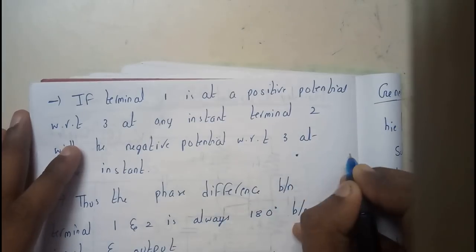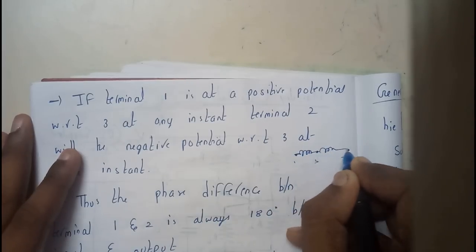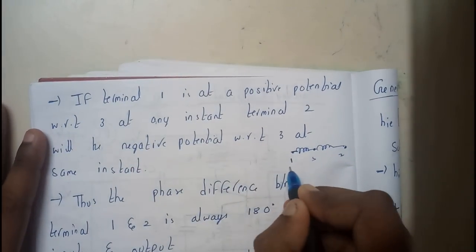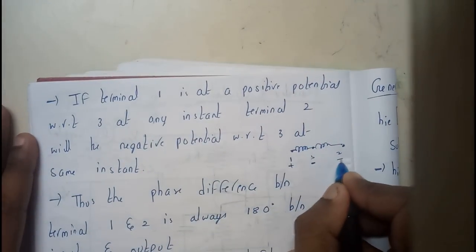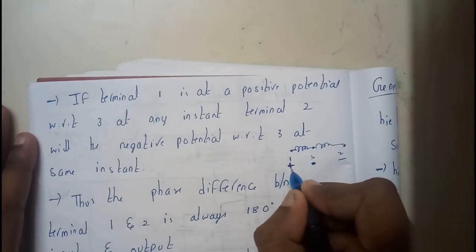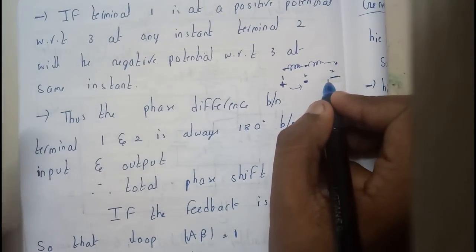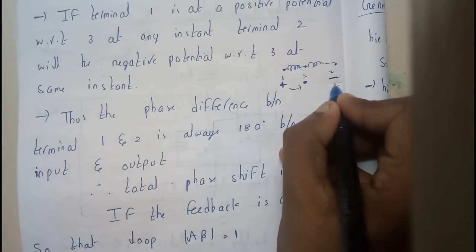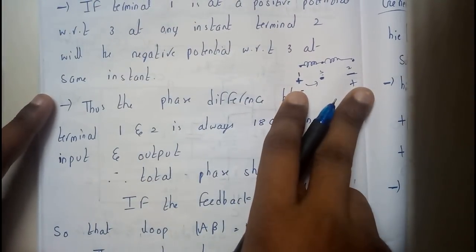Consider a rough diagram with terminals 1, 2, and 3, with inductor 1 and inductor 2. If terminal 1 is at positive potential with respect to terminal 3, then terminal 2 will become negative at that instant. We take terminal 3 as the intermediate reference point for comparison. So if terminal 1 is positive with respect to 3, then terminal 2 is negative; and if terminal 2 is positive, then terminal 1 will be negative. The phase difference between terminals 1 and 2 is 180 degrees.